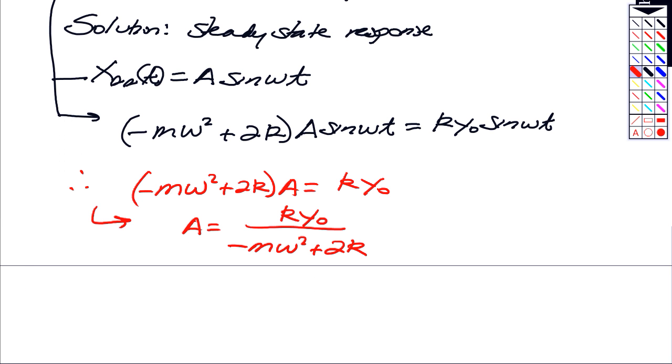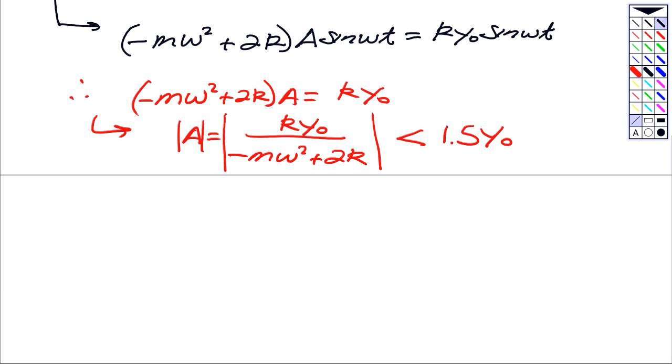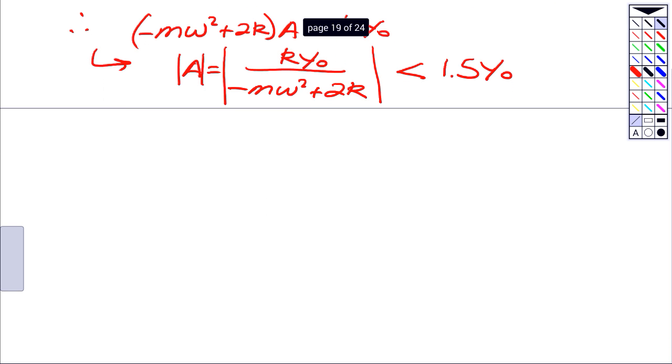And we want to make sure that that amplitude does not exceed 1.5 y naught. What frequency range, what range of values for omega can we have that make that true? Well, first thing, let's make a plot of this. Let's plot amplitude A versus the frequency of omega. Again, on the x-axis, I'm going to be plotting the frequency of excitation. On this one, I'm going to be plotting A. When omega is equal to 0, A is equal to simply y naught over 2. So this comes off here at y naught over 2.